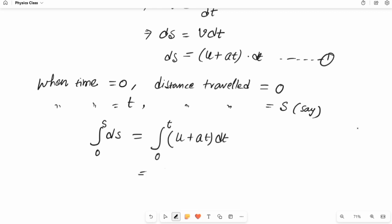So in the next step let's separate this. It will be integration 0 to t of u dt plus a integration 0 to t of t dt.